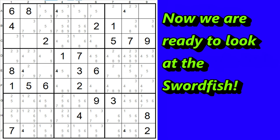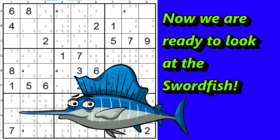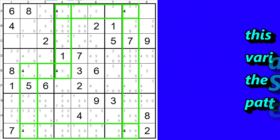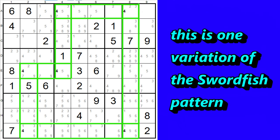Now, let's move on to the subject of this video, the swordfish. Whereas the X-Wing is a 2x2 rectangle, the swordfish is a 3x3 rectangle involving three rows and three columns. Here's how one variation of the swordfish looks.